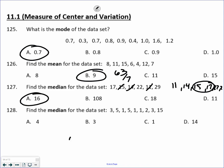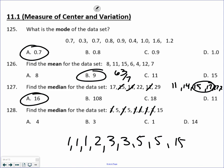Median again. There are three 1s, a 2, two 3s, a 5, a 5, and a 15 — so let me make sure I got them all: three 1s, a 2, two 3s, a 5, a 5, and a 15. That's 9 numbers. The fifth number would be the middle one, so B is the correct answer.